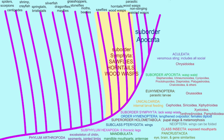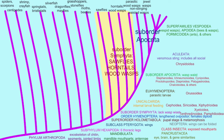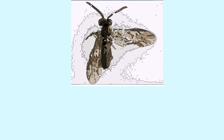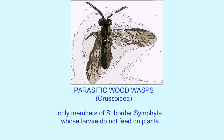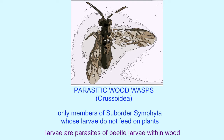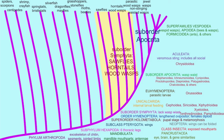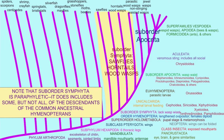The parasitic wood wasps are the members of the order Symphyta which are most closely related — they are the sister group of the suborder Apocrita, which has the wasps, bees, and ants which we are familiar with. Like the majority of wasps, their larvae are parasites feeding on insects rather than on plant material.